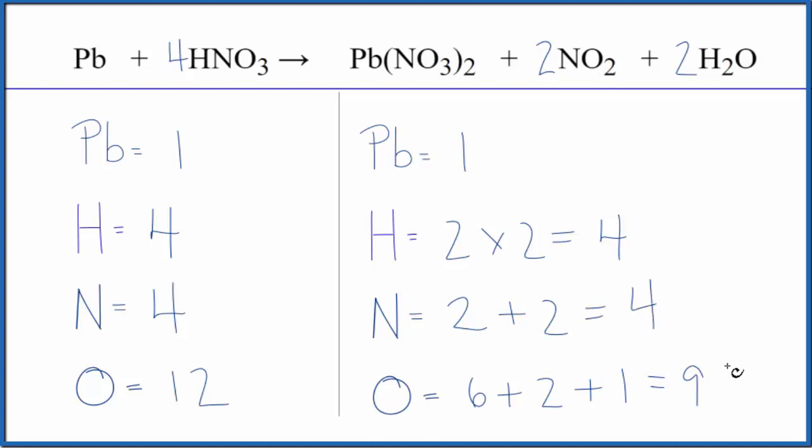I need to update the oxygens though. So I have two times three is six. Plus two times two. That's four. Plus one times two. That's two. And actually that adds up to 12. And we've balanced this equation.